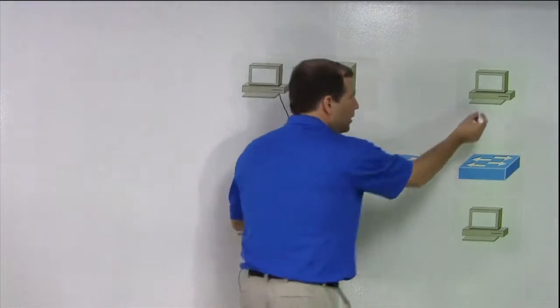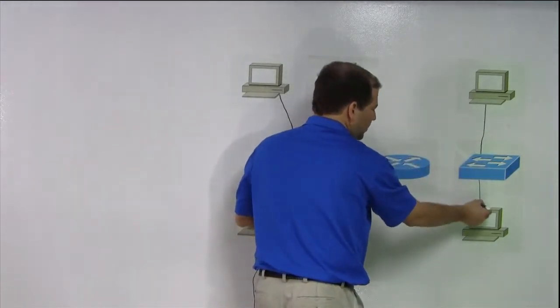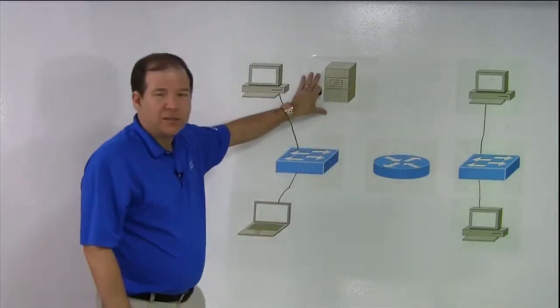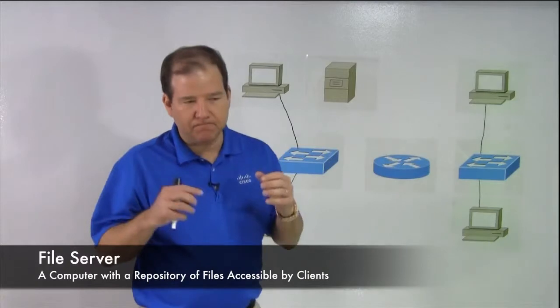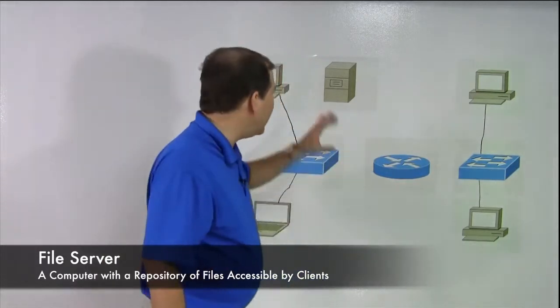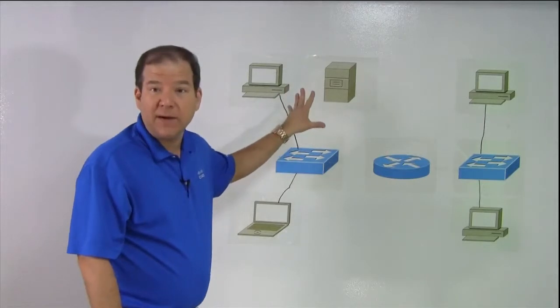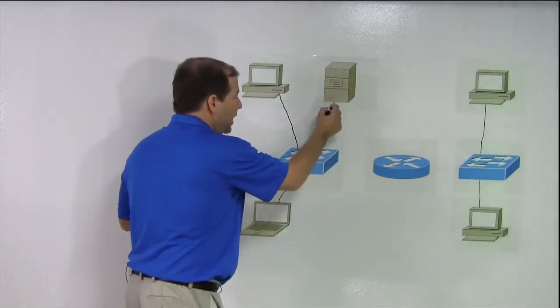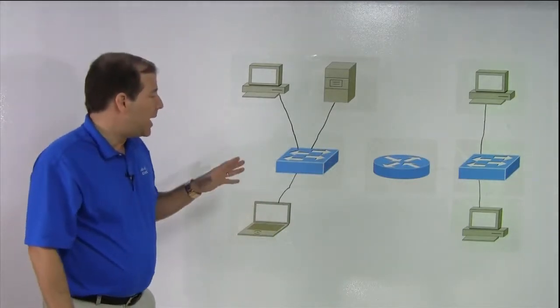We've got another switch over here on the topology. Let's connect it as well. And this device represents a file server. We might have this repository where clients can share a set of files. Maybe that's located on a dedicated file server. Maybe it's a database server, but it connects into the network just like everybody else does. It has a cable that gets it into a switch, probably a Cisco Catalyst switch.